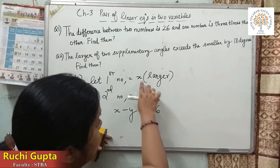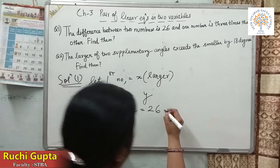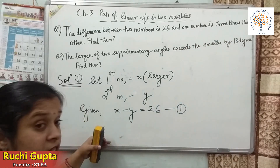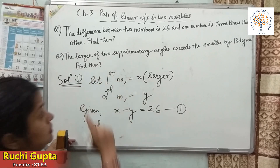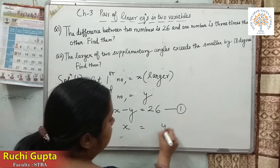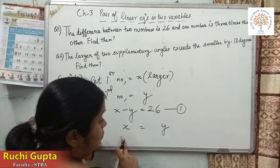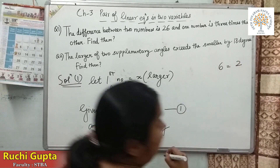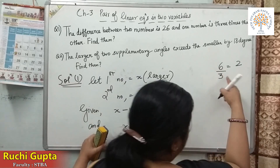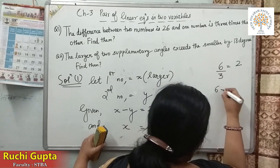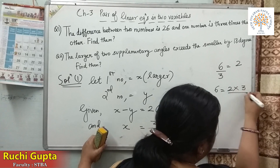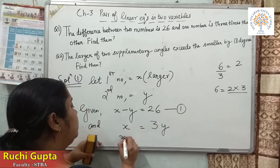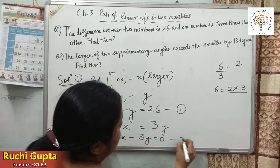If I had taken Y as the larger number, the equation would be Y minus X. So X minus Y equals 26 is my first equation. The second condition is: one number is three times the other. X is already the larger number, so to make them equal, we multiply the smaller number by 3. For example, if one side is 6 and the other is 2, we multiply 2 by 3 to make them equal. So the second equation is X equals 3Y.